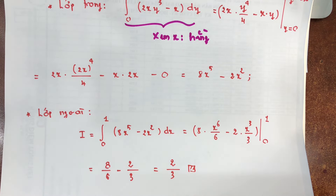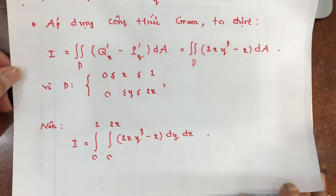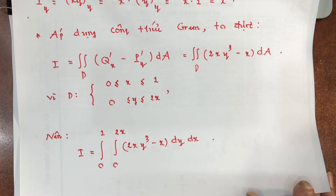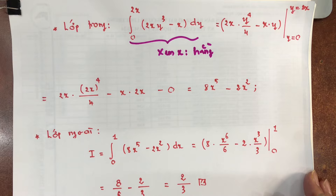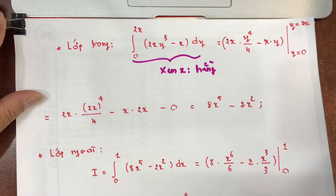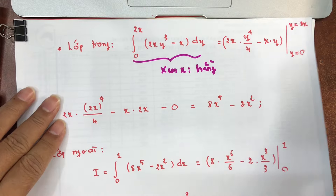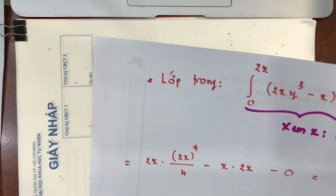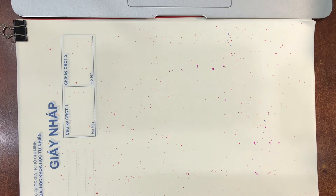Tuy bài số 2 không tầm thường và không nhanh, nhưng dù sao vẫn nhanh hơn so với việc tính trực tiếp tích phân đường loại 2 dọc theo 3 cạnh. Tính từng cạnh riêng lẻ rõ ràng sẽ dài hơn và phức tạp hơn so với áp dụng công thức Green.